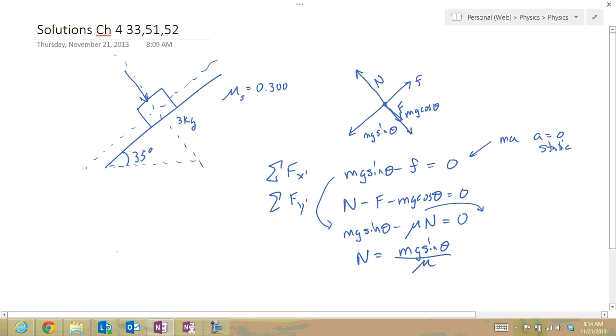I can get the second equation for n. n is equal to F plus mg cosine theta. That comes from this equation. Now I can set these two equal to each other because they're both equal to n. So I can say F plus mg cosine theta has to equal mg sine theta over mu.